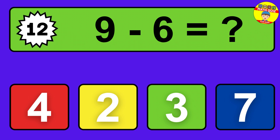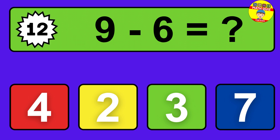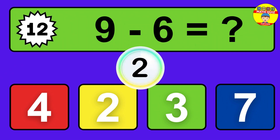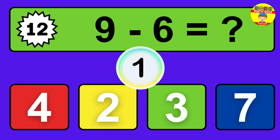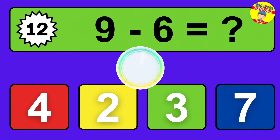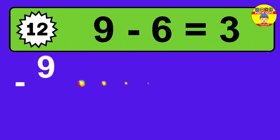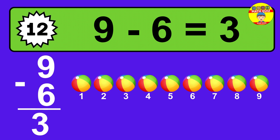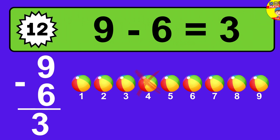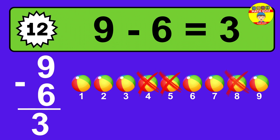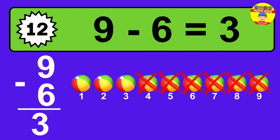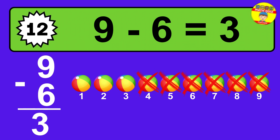Question twelve: nine minus six equals what? The answer is nine minus six is three. Let's count it. One, two, three.